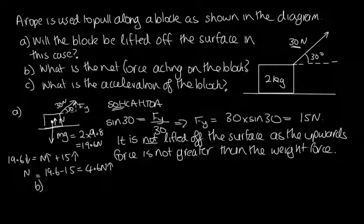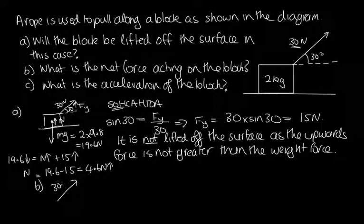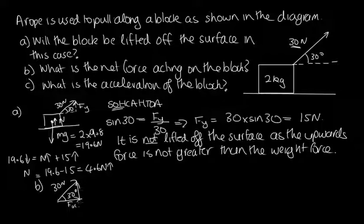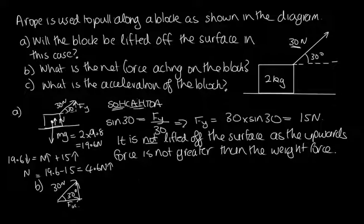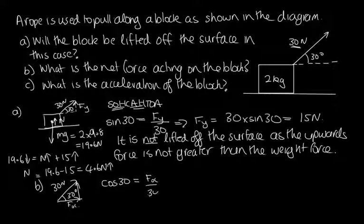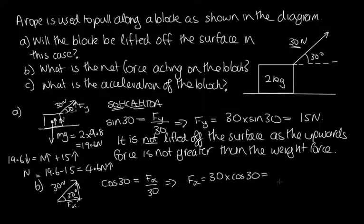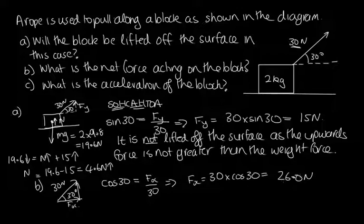The net force acting on the block is therefore only the horizontal component of the applied force. Using SOH-CAH-TOA with the adjacent side and hypotenuse: cos(30) = Fx / 30, so Fx = 30 × cos(30) = 26.0 Newtons. This is also the net force, directed to the right.